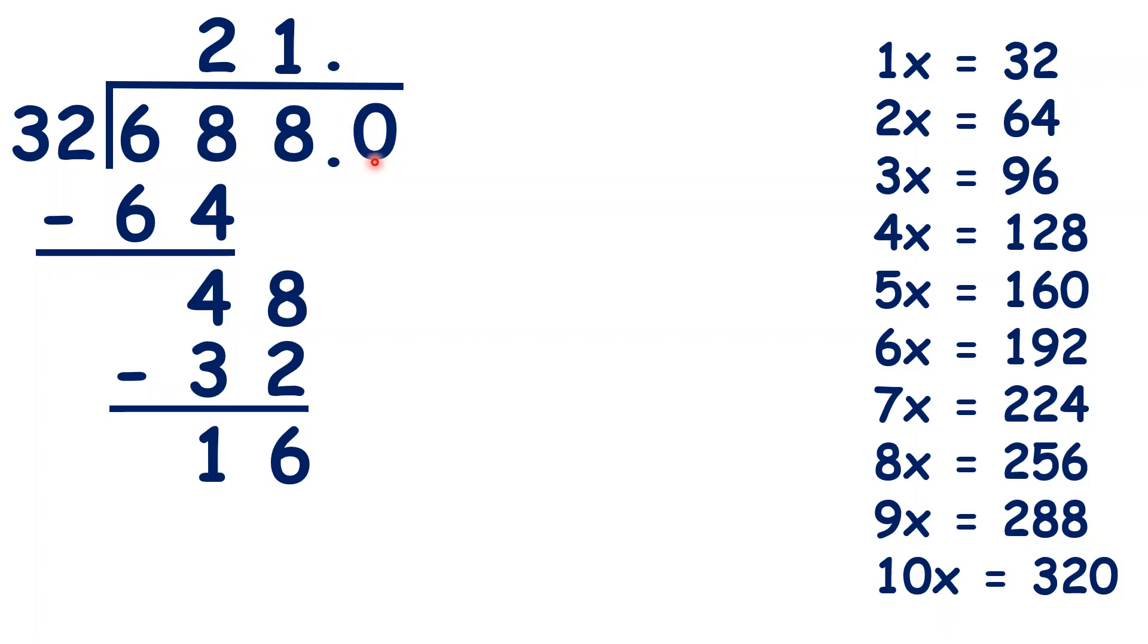And now we have another digit, we have a 0, that we can bring down. So now, we can work out 160 divided by 32. That's exactly 5, so we have 5 in our answer, and then we don't have anything else to divide.